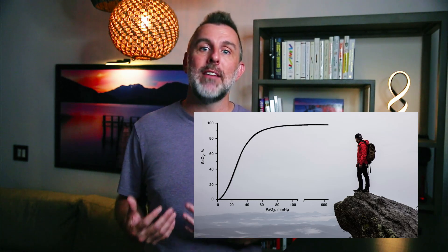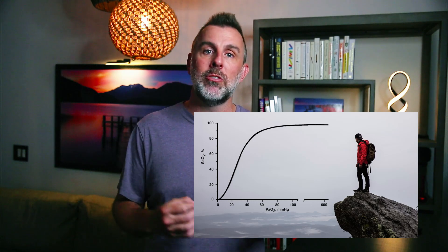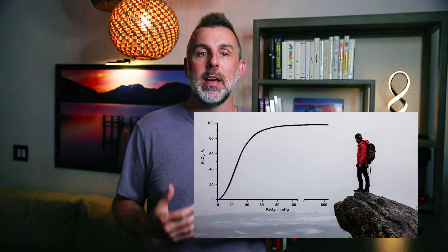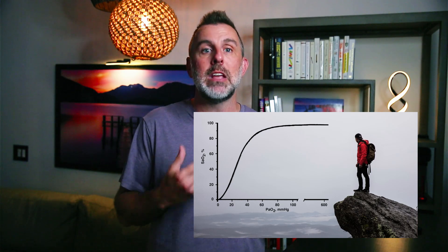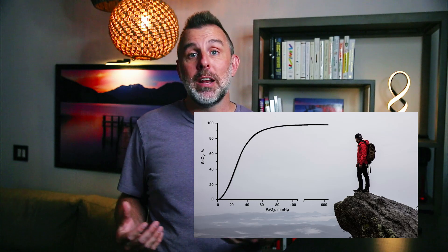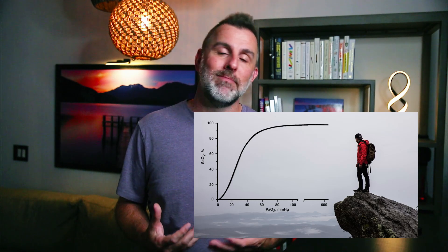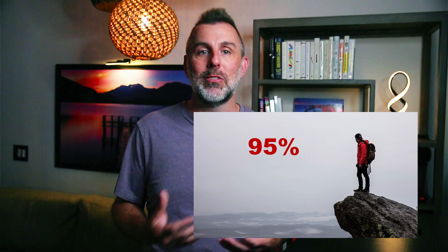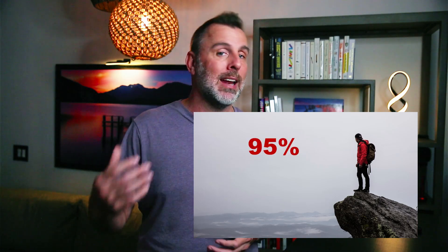My ideal is to have every patient at 100% oxygen saturation before I start intubating. 100% tells me that I have done a good job in my pre-oxygenation, and that's my target. I almost always get there. It may not be completely realistic, so 95% is my go/no-go number. If I can't get a patient to 95%, it's time to pause and think about what's wrong.